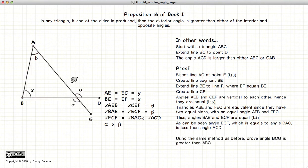To prove that alpha is also larger than gamma, let's extend the line AE to point G. These two angles are vertices of each other, so they are also equal. So this angle is alpha, this angle is also alpha.